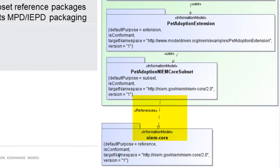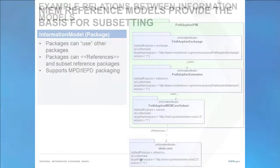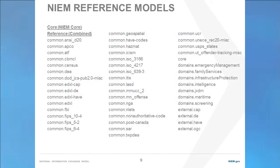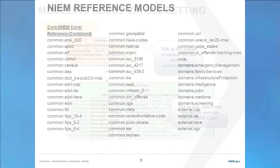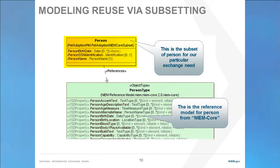A subset model also references its reference model. This means that everything in the subset is conformant to the concepts already defined in the reference model. NIEM reference models provide the basis for subsetting and reuse, and each of these is available as a NIEM UML model. There's a whole library of reference models for different domains and different purposes, the most general being NIEM core, which is reused across all domains and exchanges.